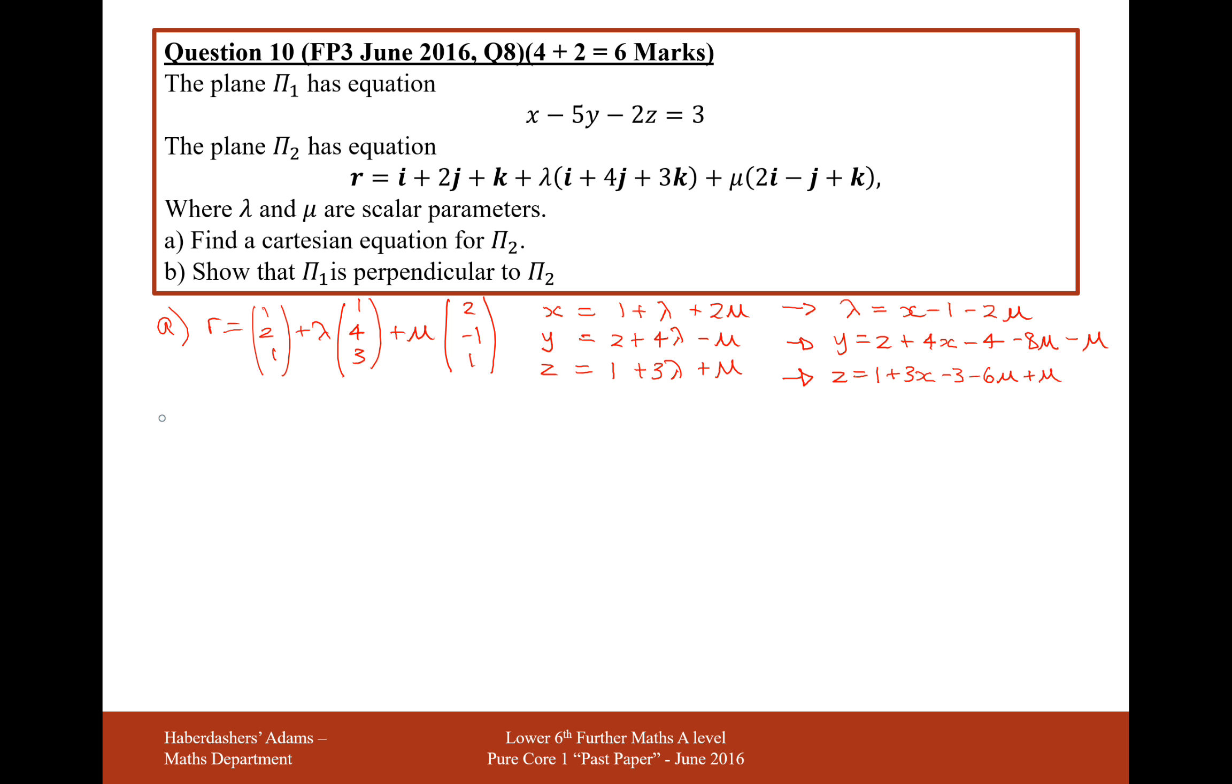Okay, so let's simplify these equations down. We're going to get y equals minus 2 plus 4x minus 9μ. And on the second one, it's going to be z equals minus 2 plus 3x minus 5μ.